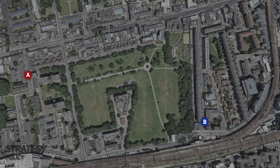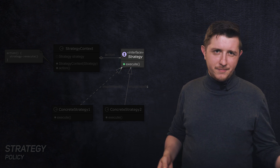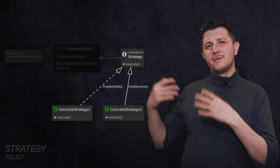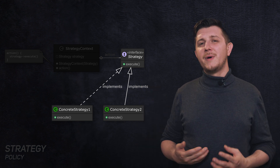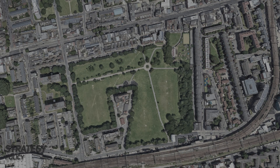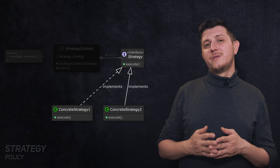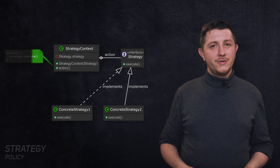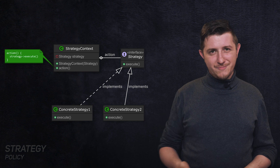The most common example given is route finding. We define a strategy interface with one method: execute. Execute is implemented by our concrete strategies. For route finding, we pass all the details of the route as parameters to those methods. We prepare three classes that implement the execute method in different ways — by foot, by public transport, by car. All we have to do is create an object that accepts a strategy in the constructor and calls the execute method of that strategy during route calculation.